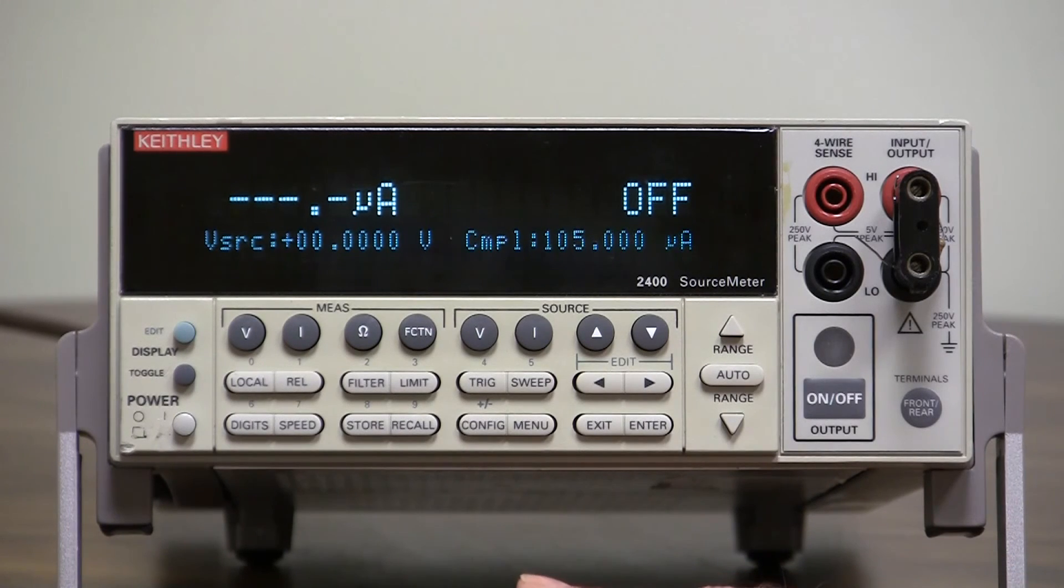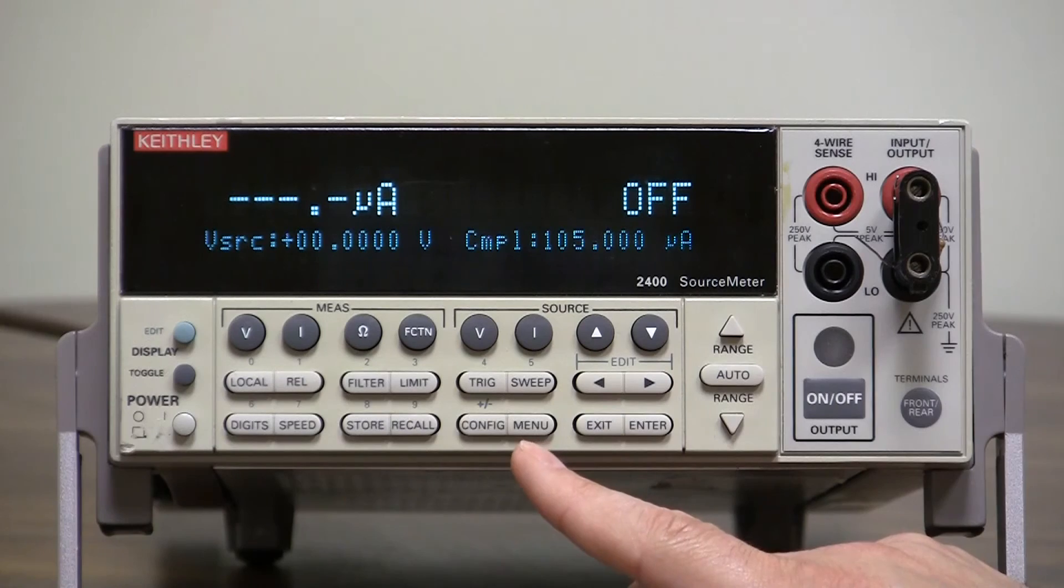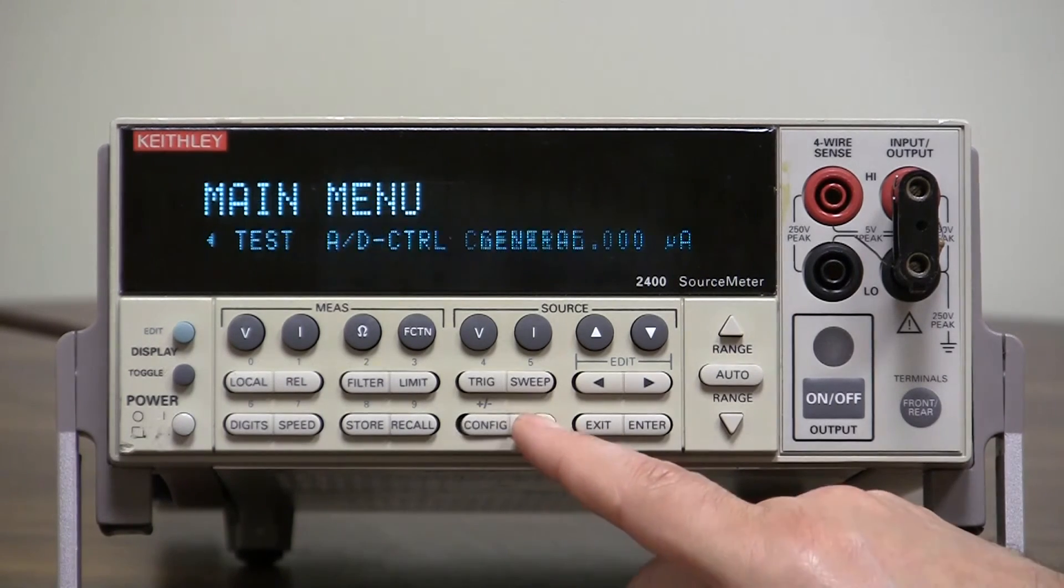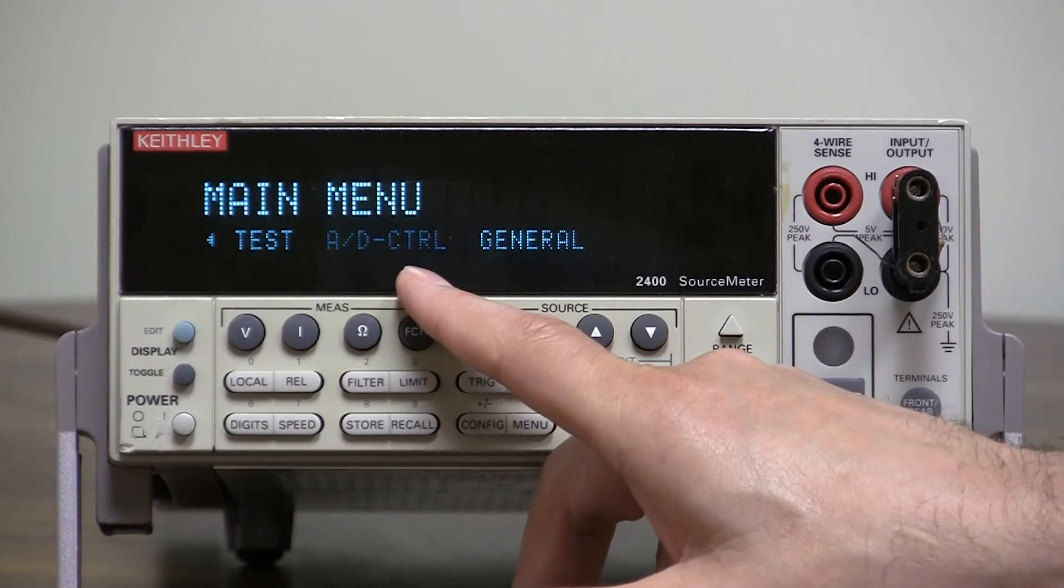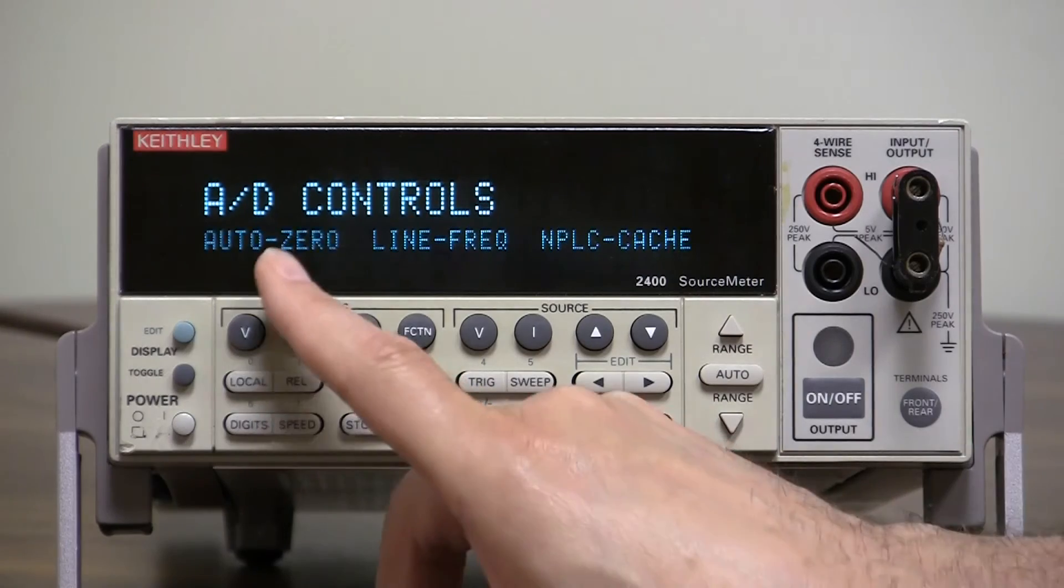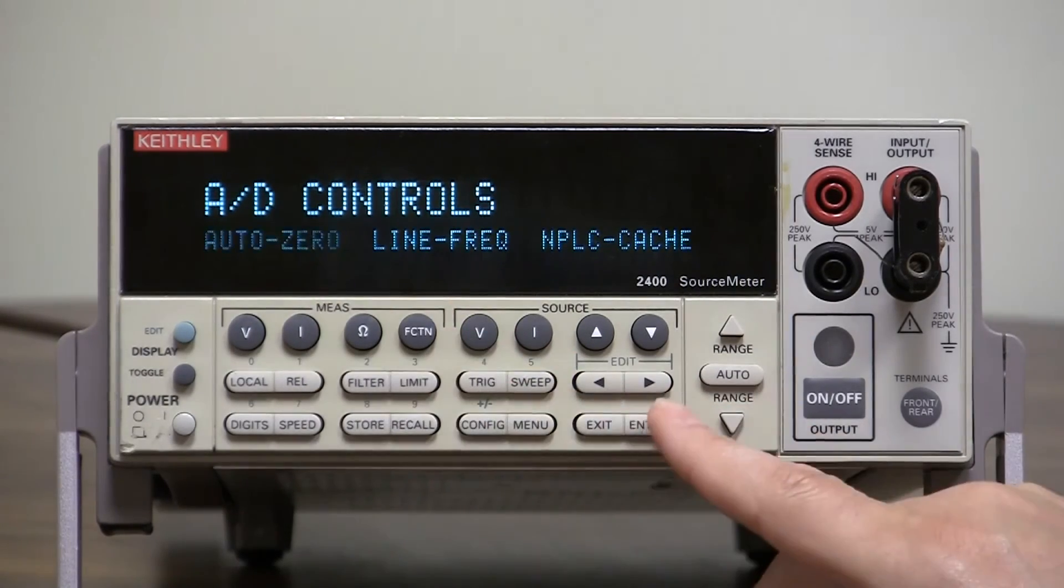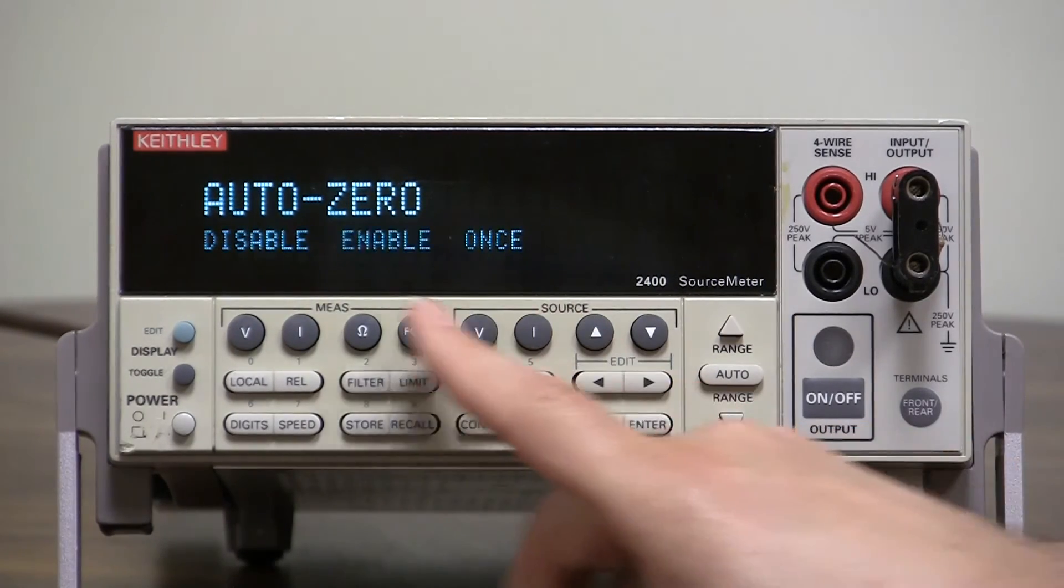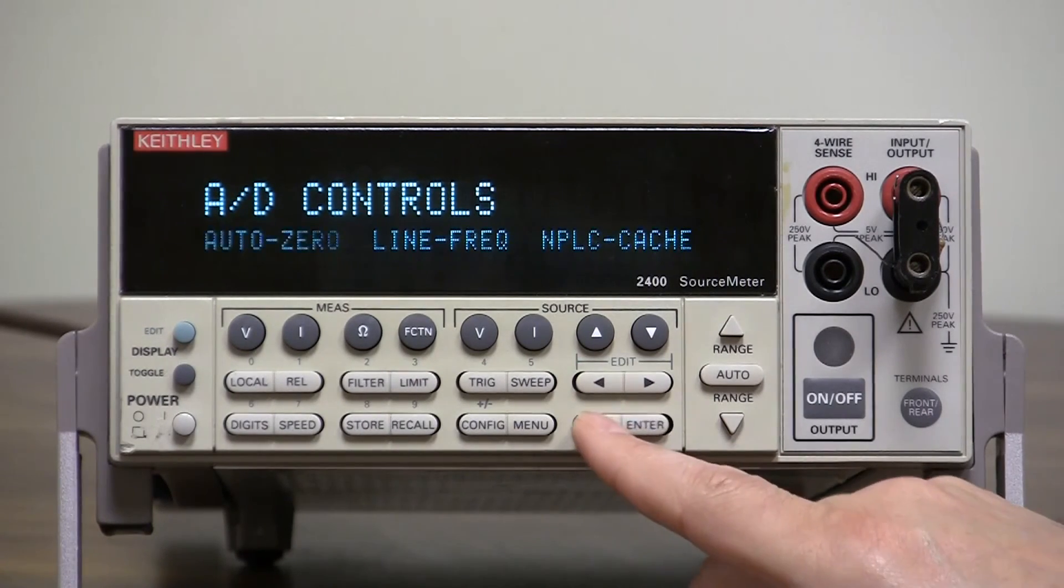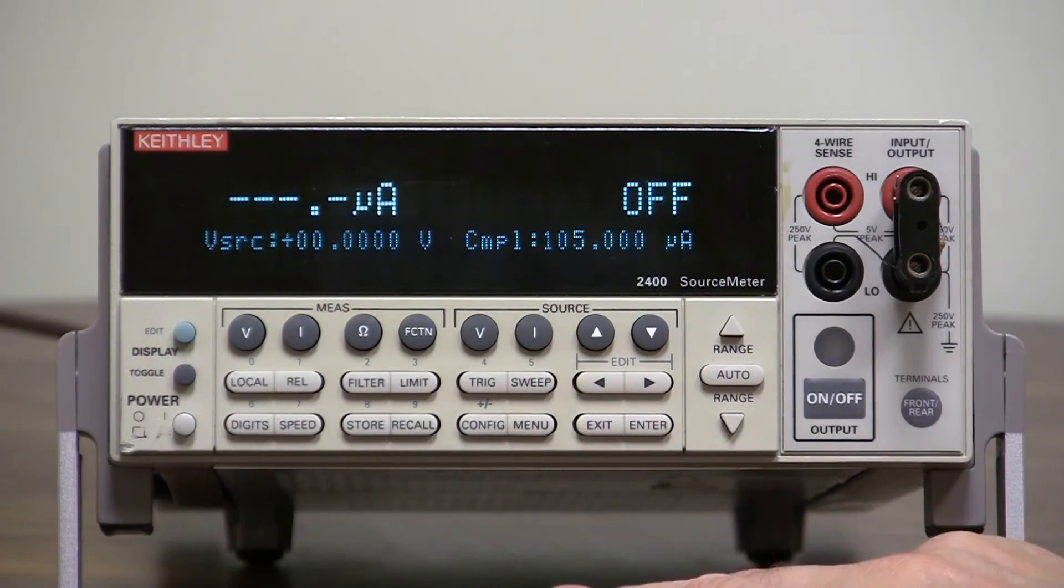One other thing that a lot of people don't realize is the auto zero function. That plays a big part in speed. So let's turn that off. Menu, go to A to D control, enter. Select auto zero, select disable, enter, exit, exit, exit.